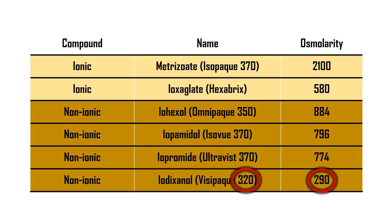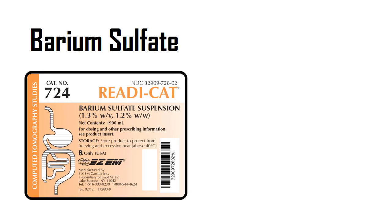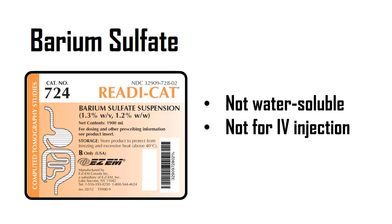Besides iodine, there is another type of contrast sometimes used in CT — and that is barium sulfate. Barium sulfate is completely different from water-soluble iodine in several ways. For example, barium sulfate is not water-soluble. Because it's not water-soluble, it is not safe for IV injection. Barium sulfate is only used in the GI tract — sometimes given orally, sometimes given rectally — but never used for IV injection.